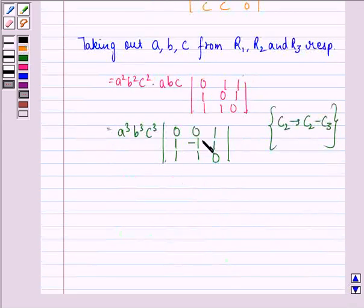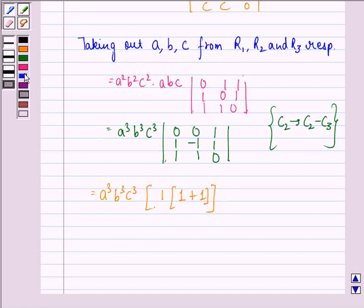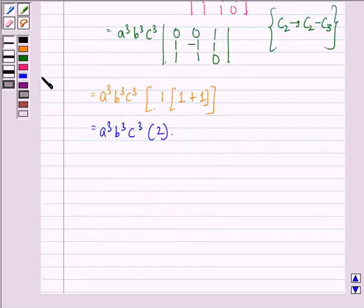Now, expanding from the first row, we get a³b³c³ times 1 times (1 plus 1). So this equals a³b³c³ times 2, and that equals 2a³b³c³.